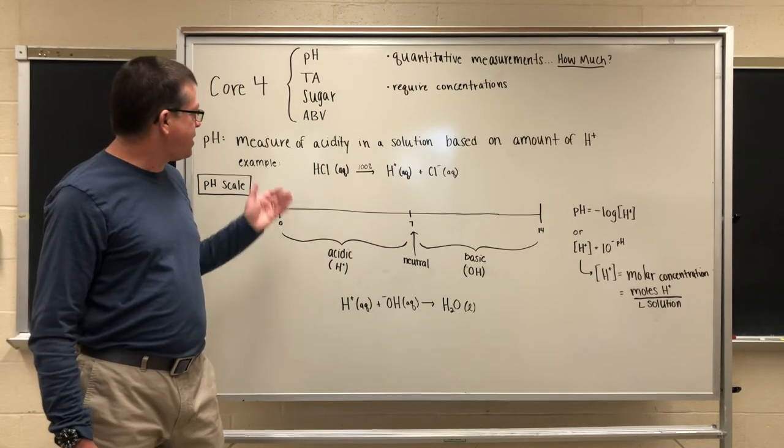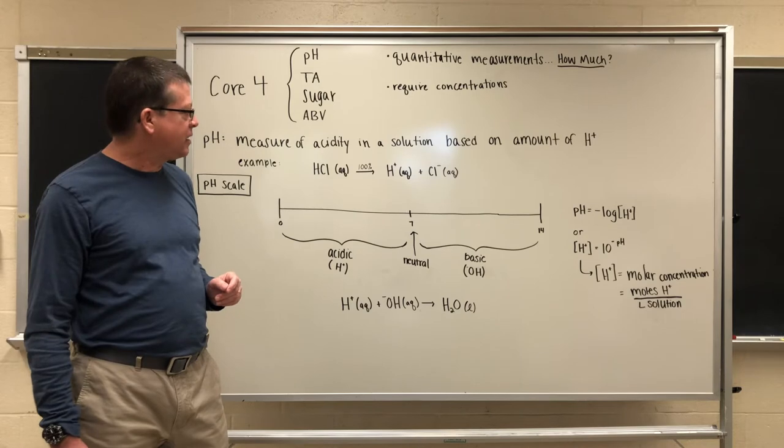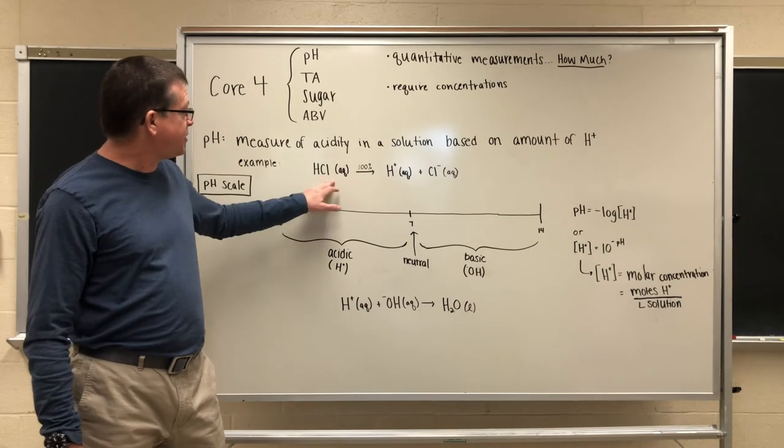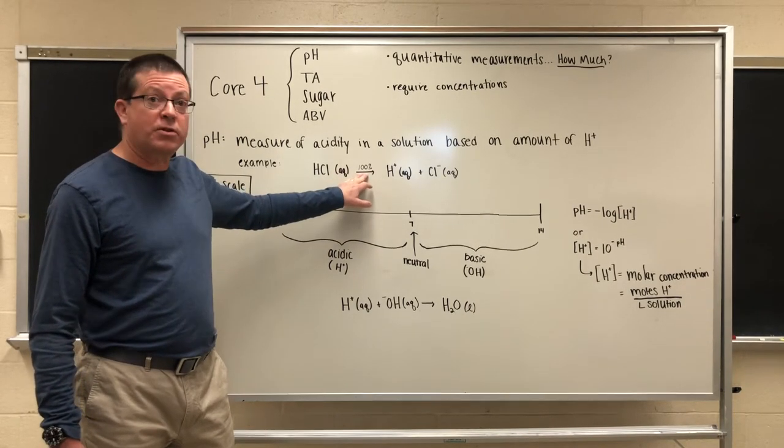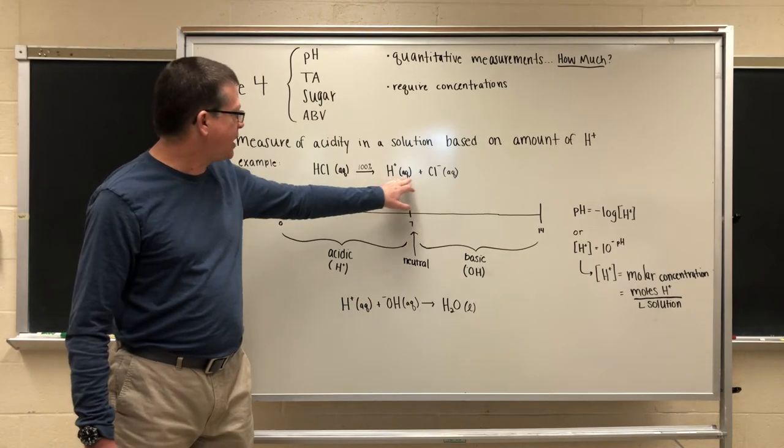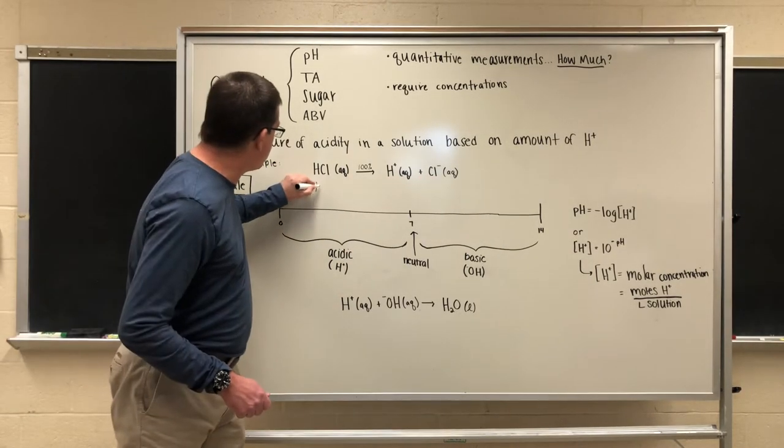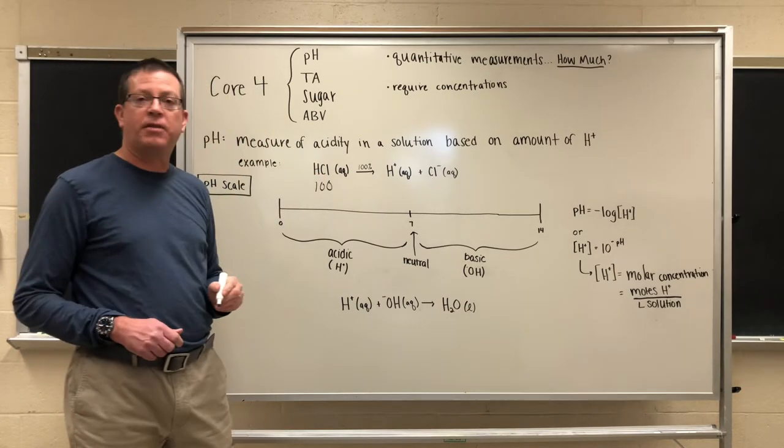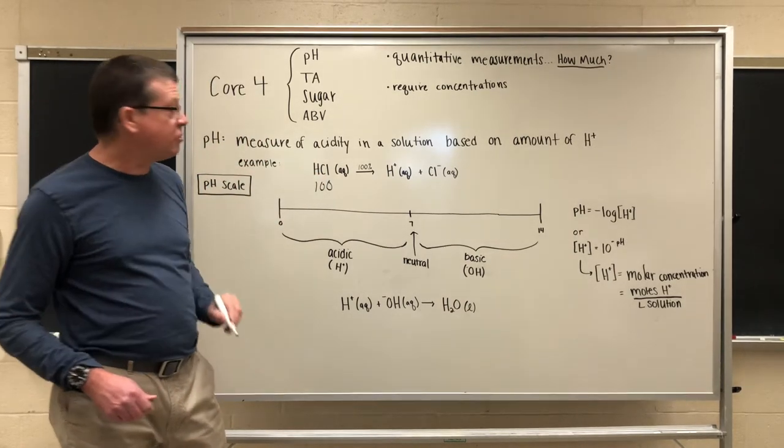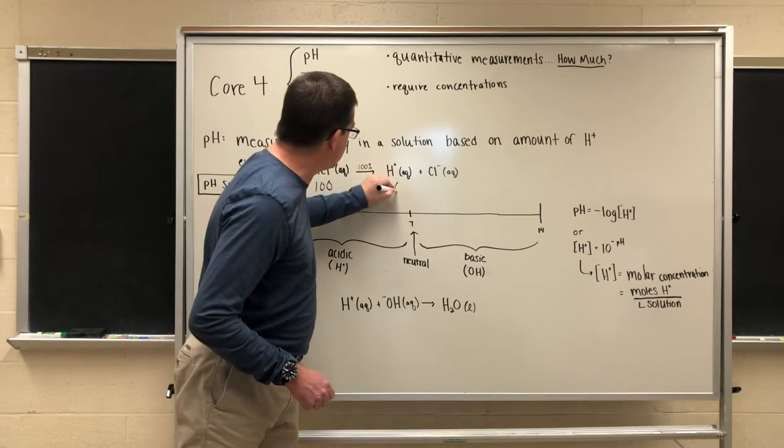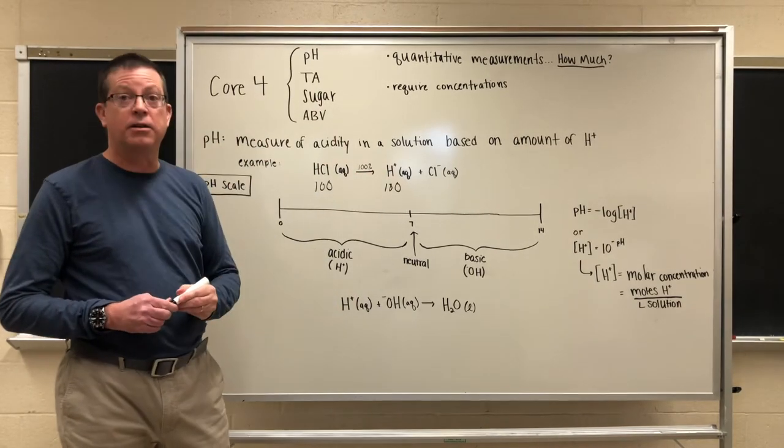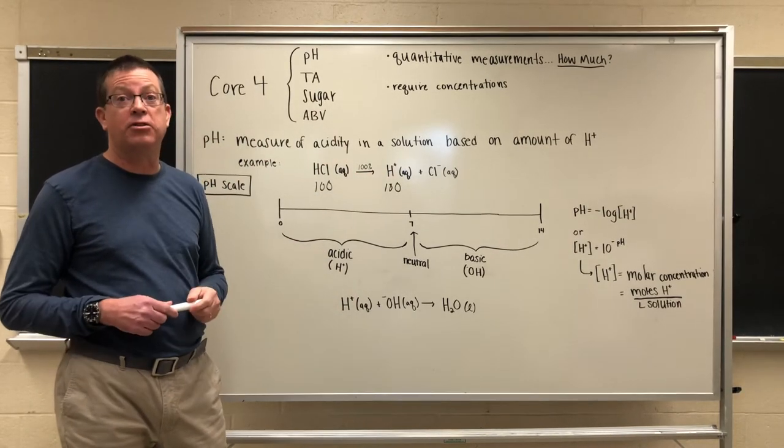Now we state that an acid like HCl is a strong acid and what that means is that this acid is going to dissociate 100% into hydrogen ion and chloride ions. So if I had 100 molecules of hydrochloric acid I would get upon dissociation 100 molecules of the hydrogen ion which is what we're interested in measuring here.